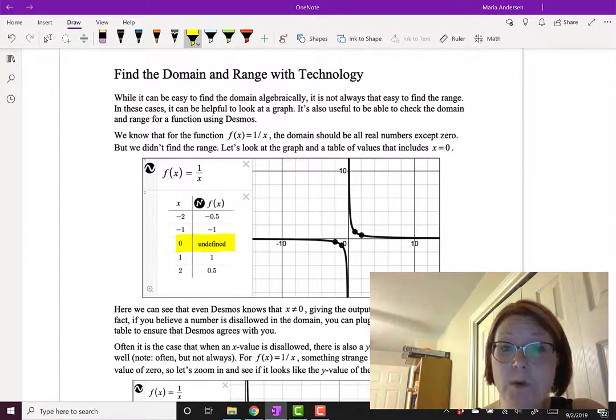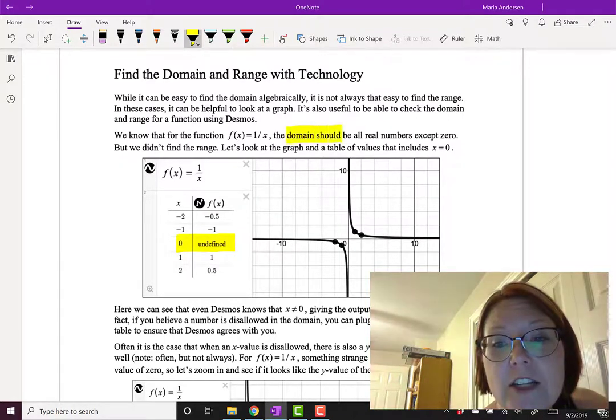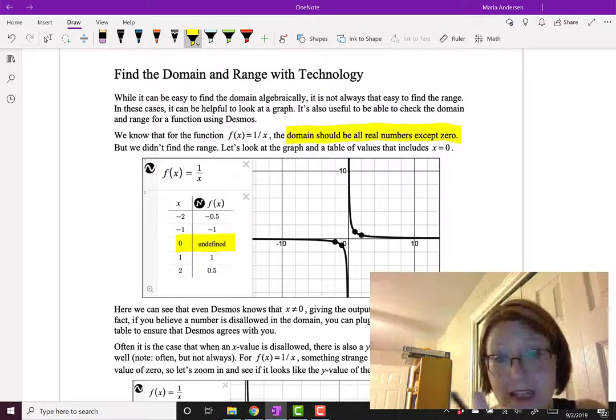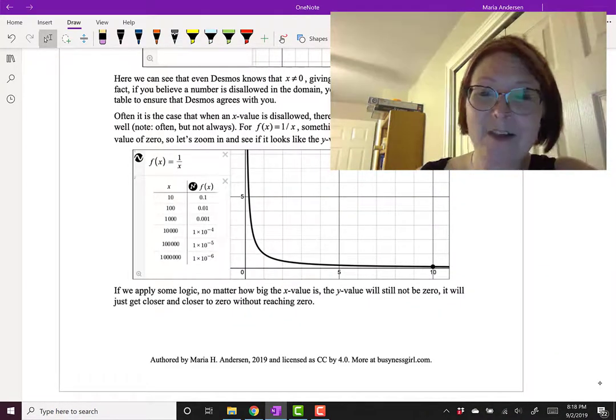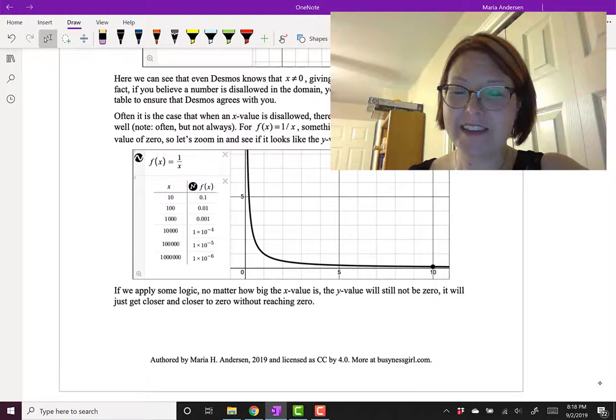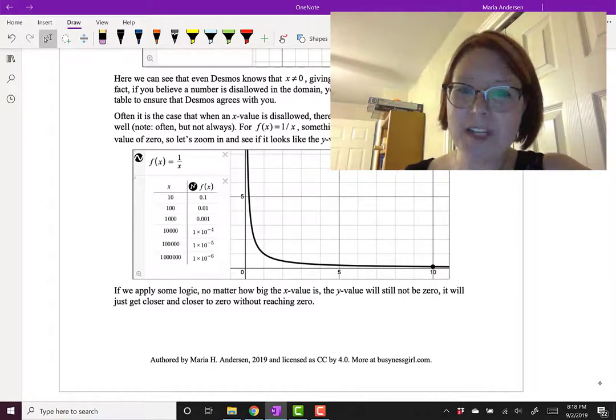This verifies what we know about the domain, that the domain should be all real numbers except zero. Often it's the case that when there's an x value that's disallowed there's also a y value that's disallowed. It doesn't happen all the time, but it's pretty often.